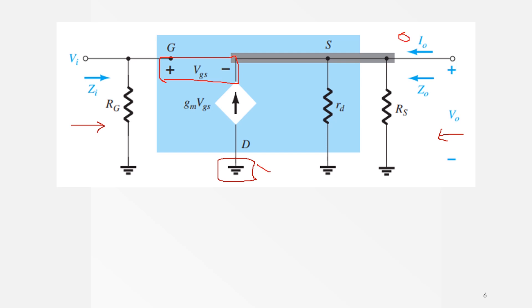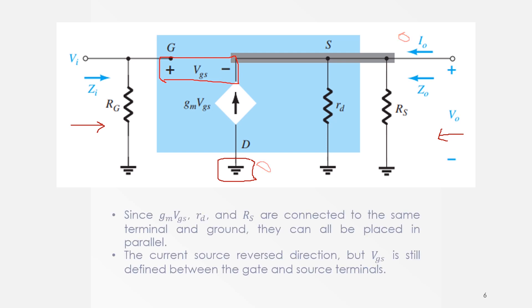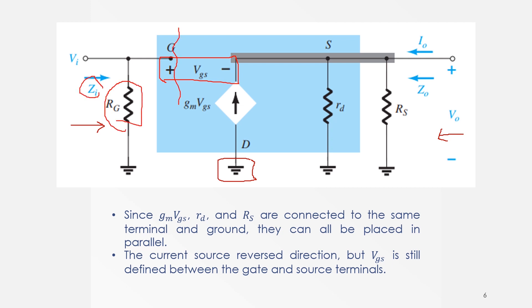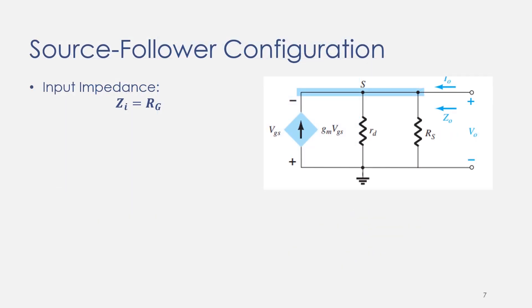We need to find input impedance, output impedance, and voltage gain. For input impedance, we can clearly say that the input impedance is simply the resistance Rg, since the circuit is not connected beyond this section.